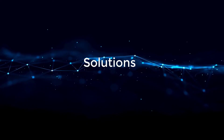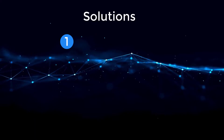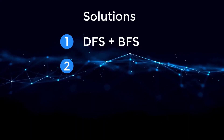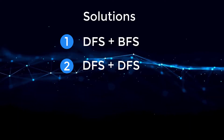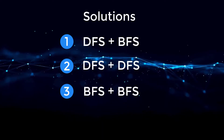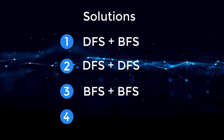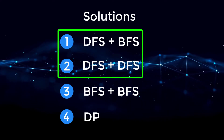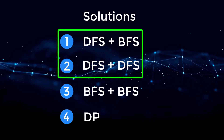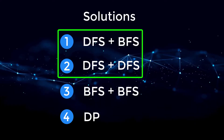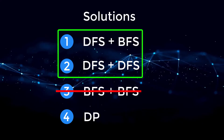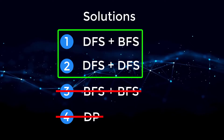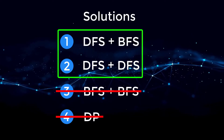We have a couple different approaches to choose from. The first is depth first search with a nested breadth first search. The second is depth first search with a nested depth first search. The third is breadth first search with nested breadth first search, and the fourth is dynamic programming. For this video I'll go over approaches one and two. The BFS plus BFS involves a lot more extra code and the DP approach is much more difficult, so I'll save that for another video.